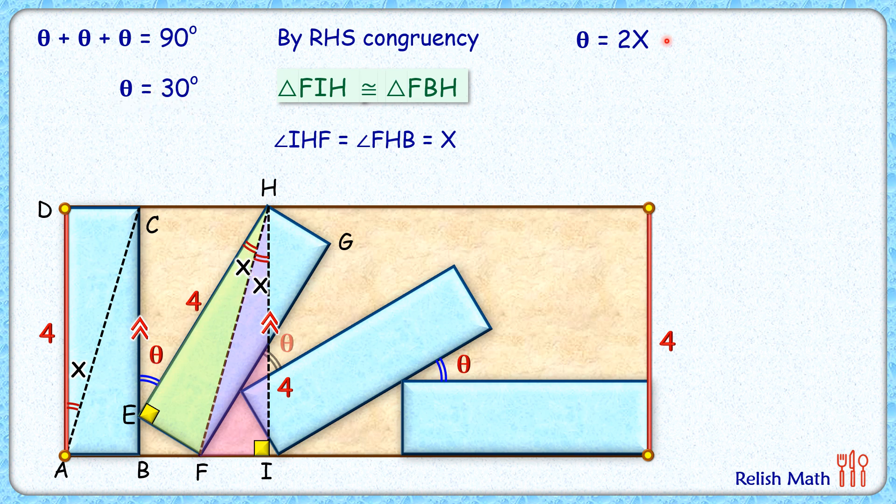But theta is 30 degrees, so x is 15 degrees. As x is 15 degrees, this angle is 15 degrees. In triangle DAC, applying trigonometry, we get DC length as 4 times tan 15.